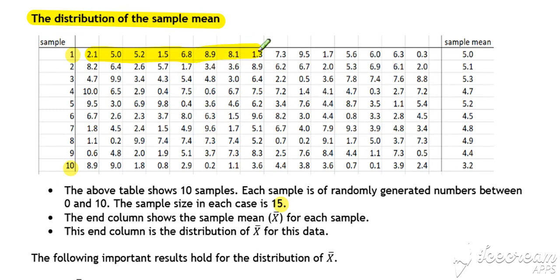So sample 1, 15 numbers randomly generated between 0 and 10. And at the end, we've just worked out the average of that set of 15. If we do that again and work out the average and so on and so on, the numbers that we're getting in this column at the end, these values are all sample means and this is the distribution of our sample mean. So that's what we mean by the distribution of the sample mean.